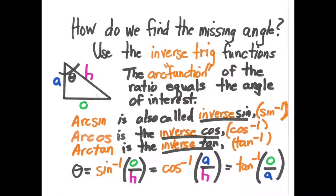Now, how do we find the missing angle? We use a thing called an inverse trig function, also known as the arc function. So we have arc sine, arc cosine, and arc tangent. They're also shown on your calculator as sine to the minus one, cosine to the minus one, and tangent to the minus one.